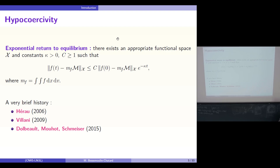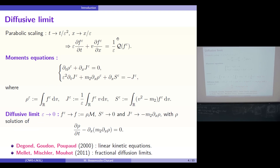Concerning the diffusion limits: starting from the kinetic equation, if we perform the classical parabolic scaling, we can rewrite it under this form. The parameter epsilon corresponds to the Knudsen number, which is the ratio between the mean free path and the length scale of observation, and it is a measure of the rarefaction of the gas. When epsilon is close to 1, this corresponds to the kinetic regime; when epsilon tends to 0, this corresponds to the diffusive limit.